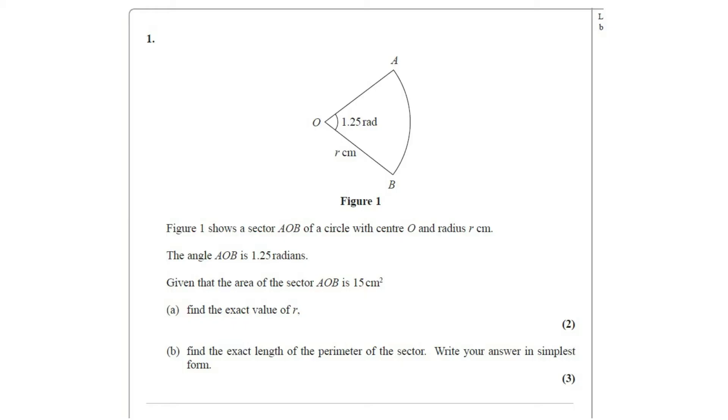Question number one: you are given a figure. Figure 1 shows a sector AOB of a circle with center O and radius R centimeters. The angle AOB is 1.25 radians, given that the area of the sector AOB is 15 centimeter square.